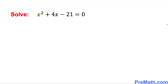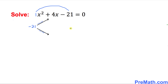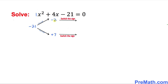Let's look at the next example. This quadratic equation is in standard form, and our leading coefficient is 1. Let's create a rainbow and multiply the end numbers: 1 times negative 21 gives us negative 21. We need to factor negative 21 to get positive 4, and the possible factors are negative 3 and positive 7. In the next step we change the signs: negative 3 becomes positive 3, and positive 7 becomes negative 7.